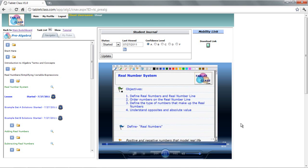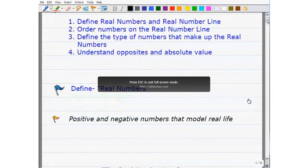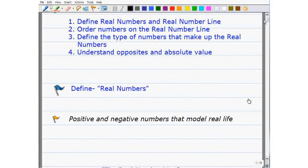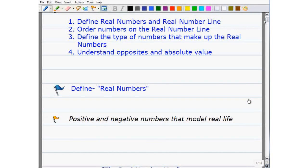So let's go ahead and define real numbers. Basically, I want to give you a non-mathematical definition to think of real numbers, and that is real numbers are positive and negative numbers that model real life, something that we've always experienced or have a sense of. Let's talk about a few examples here just so you know what I'm talking about.